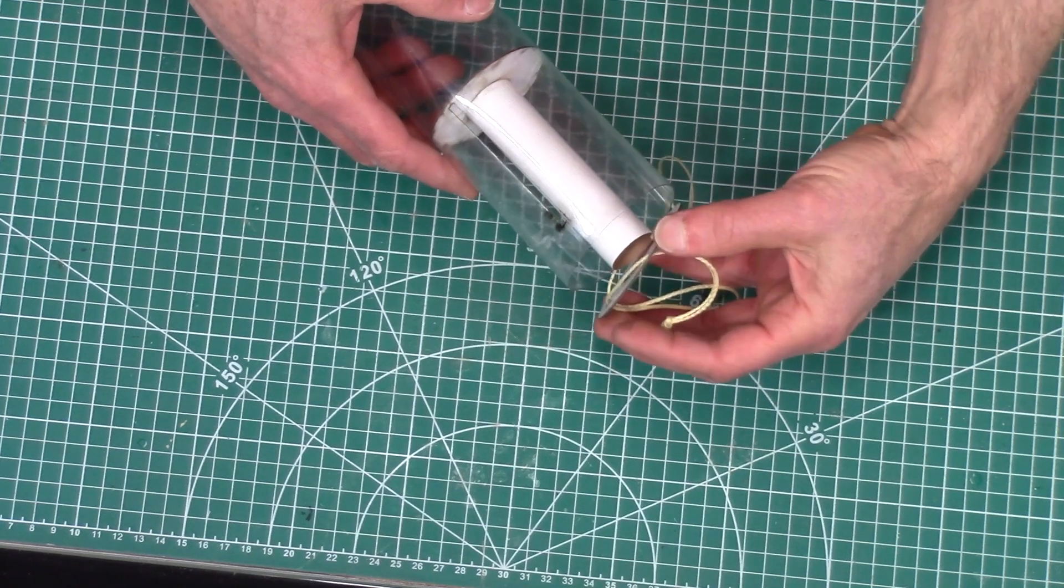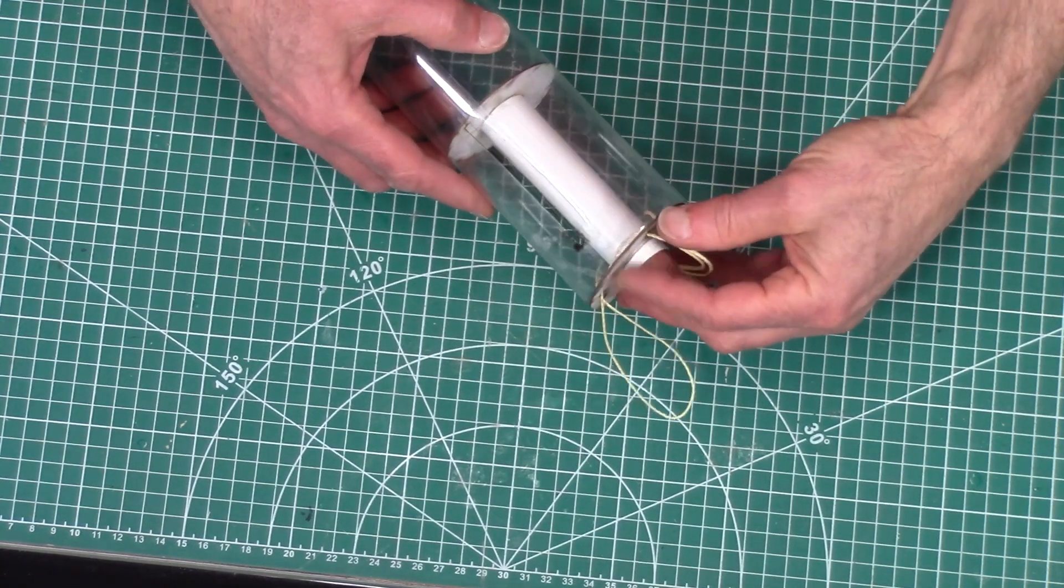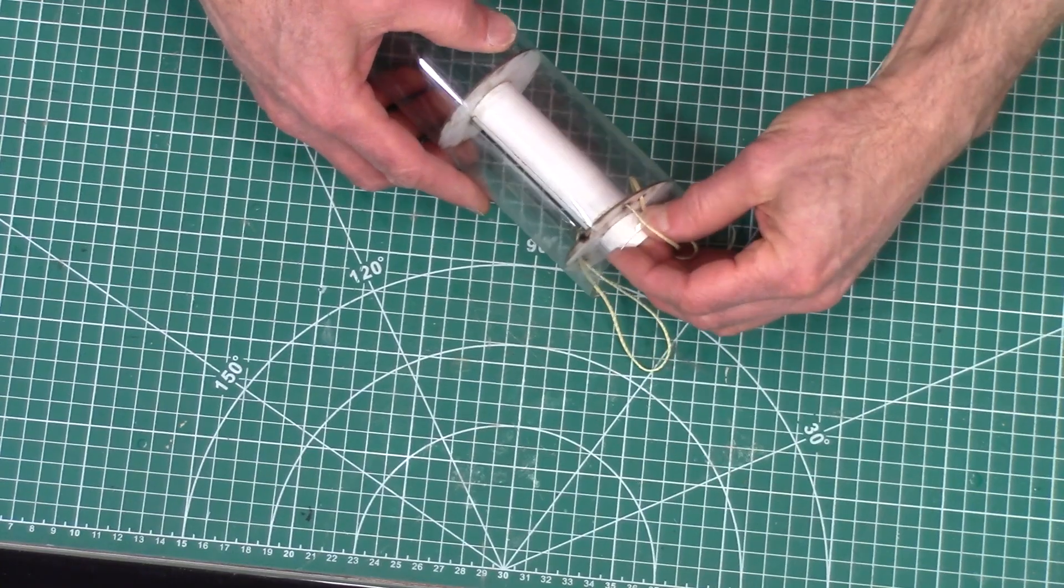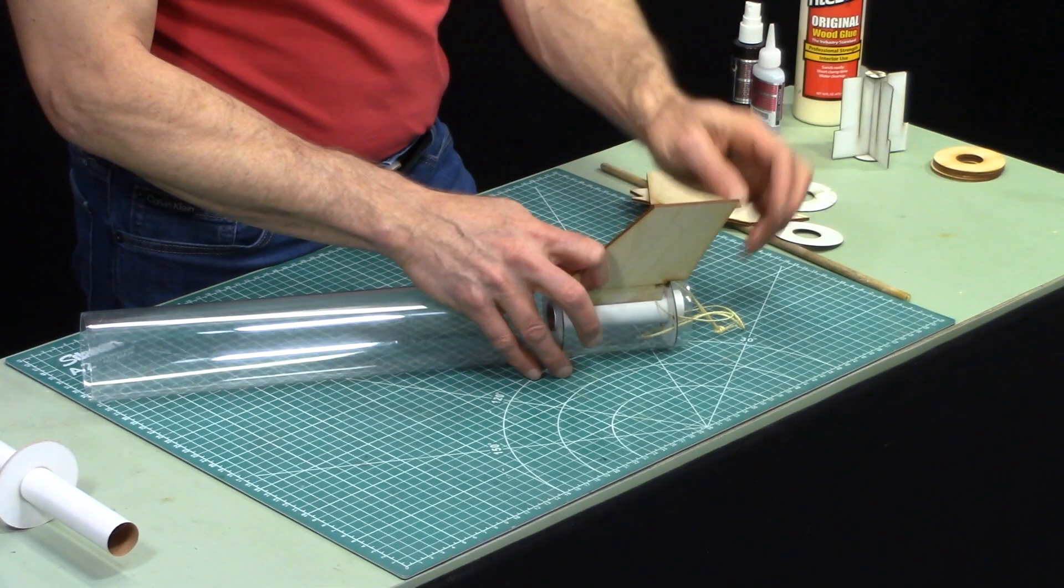So what I would do is put that front ring in, glue this one in place before the glue is dried, put this one in to make sure that it's nice and centered and then at the same time you can also glue your fins in.